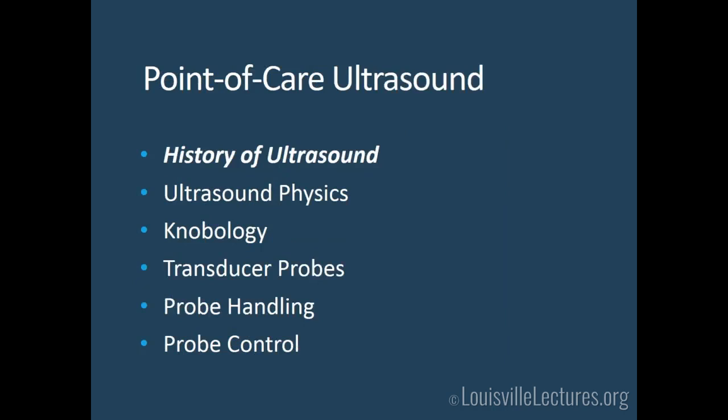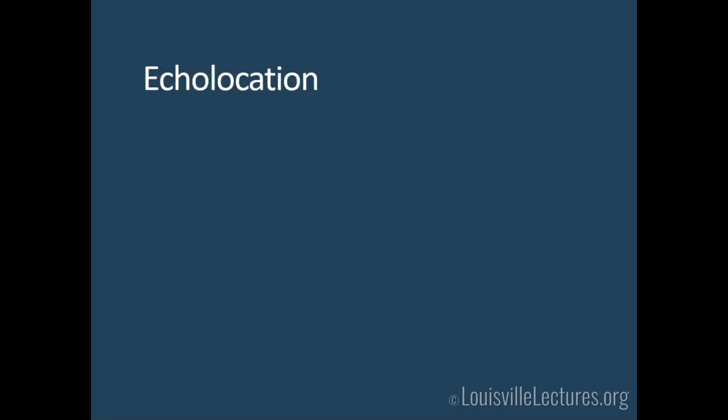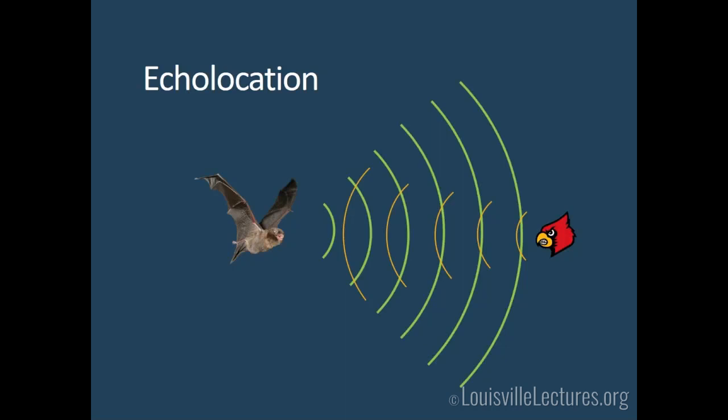Moving on to the history of ultrasound. Echolocation comes from bats — a bat will emit a clicking noise, and that bounces back to tell them if there are things around where they're flying. This keeps them from crashing into things. We use a similar concept in critical care ultrasound.